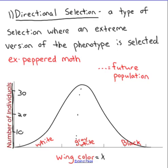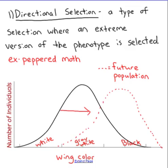Directional selection is a type of selection where an extreme version of the phenotype is selected. The best example is the peppered moth. Before the industrial revolution, these moths sat on gray-white trees and blended in. The industrial revolution put soot on the trees, making them black, which changed the phenotypes within the population and moved wing color in one direction — from gray-white toward black — because darker coloring provided better camouflage. The selection was moving in one direction, to the right, toward a darker population.